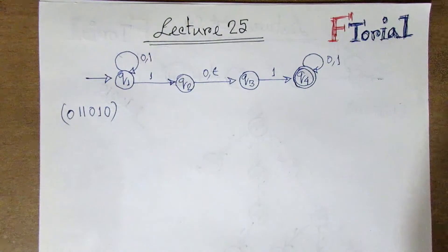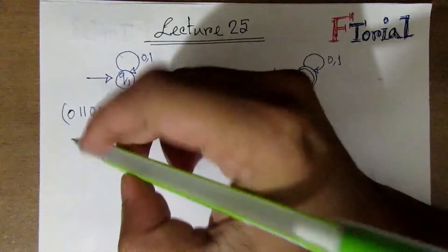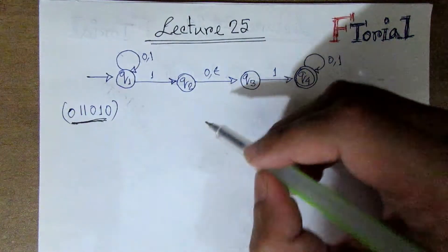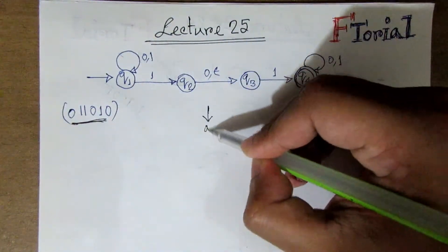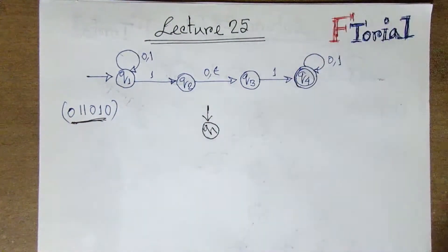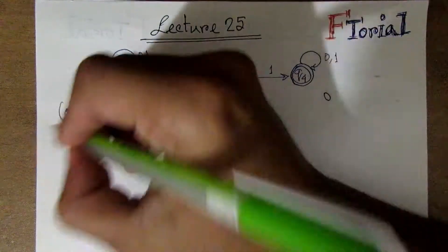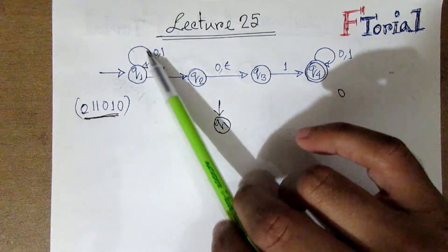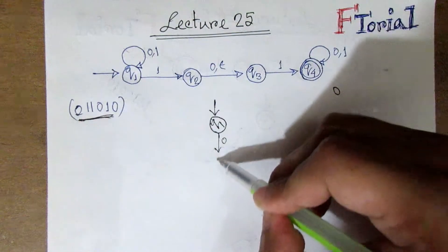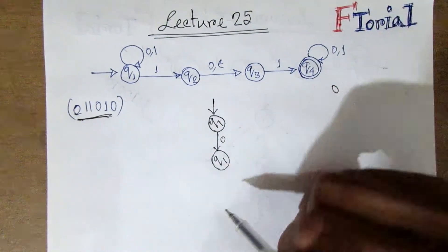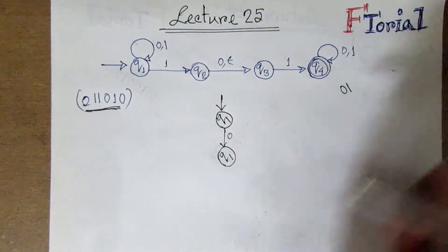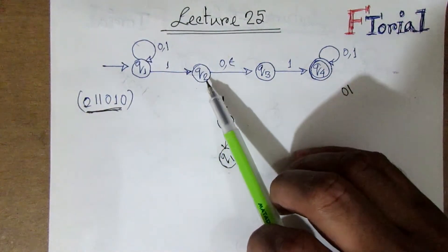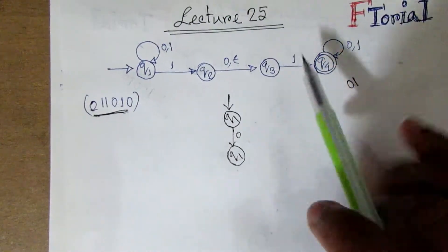We have to show you the same effect of the testing. So, the first start state is q1 — start from q1. Our first input is 0, so on 0 from q1 we stay at q1. Then on the next input 1, from q1 we go to q1, then q2, then epsilon to q3.